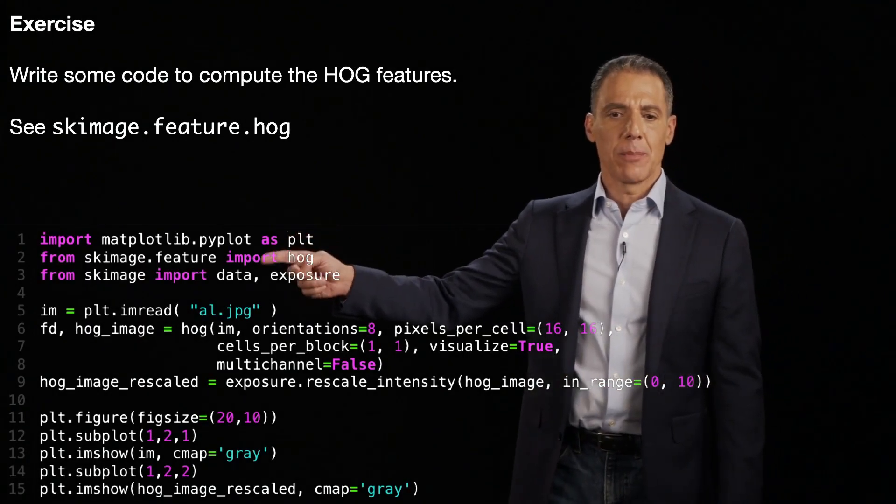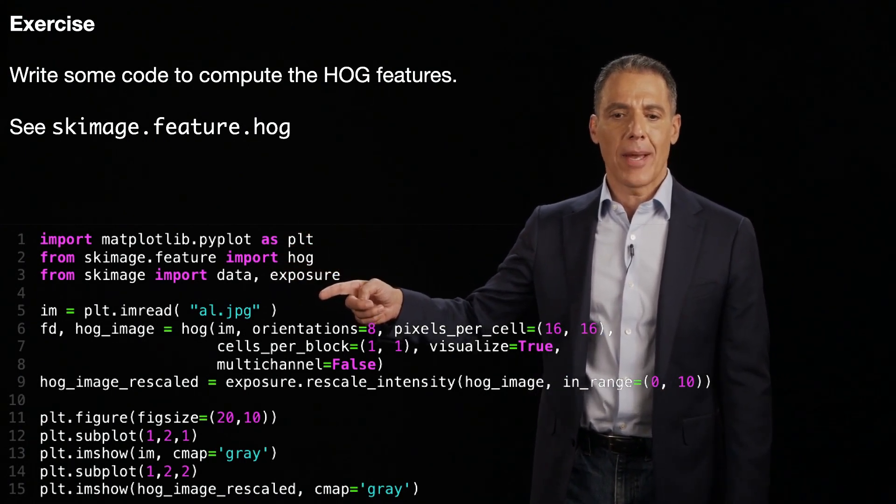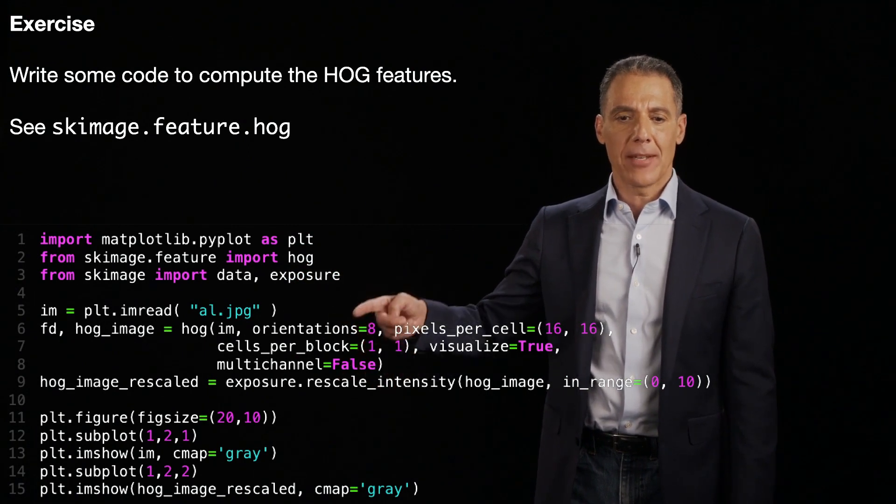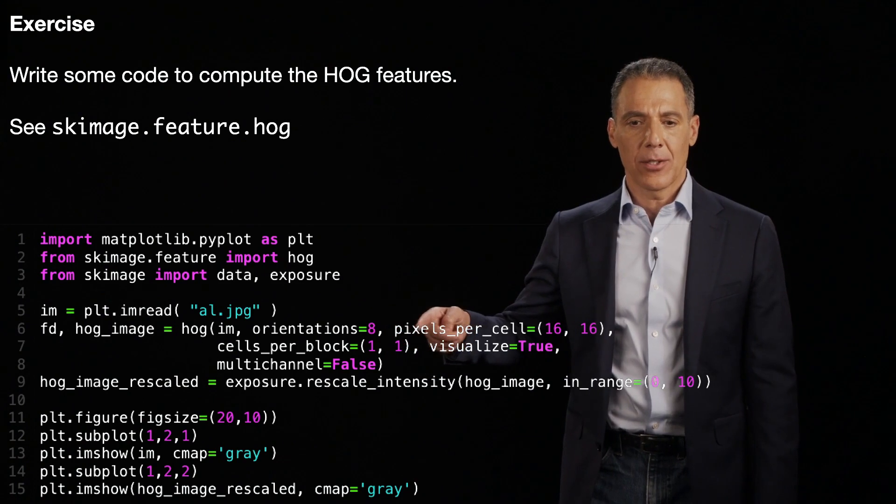So as promised, we're going to import some libraries, particularly for doing the HOG detection. I'm going to load my image. And there's one big command here. You can see it where I'm getting the HOG detector.